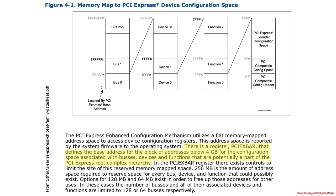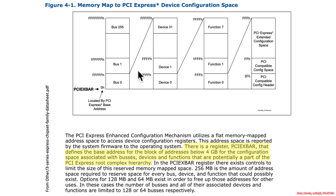What this means is that there's a big long array of four-kilobyte PCIe Express extended address spaces that, when laid end to end starting at PCIe XBAR, can end up being up to 256 megabytes of memory-mapped IO.